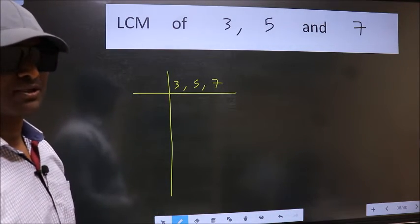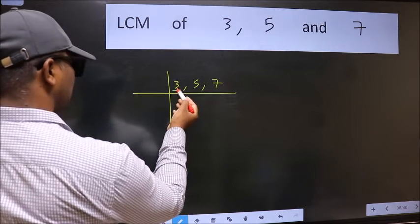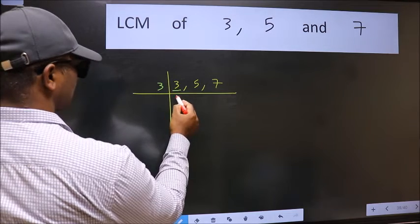Now we should focus on the first number which is 3 here. 3 is a prime number so 3 goes into 3 once.